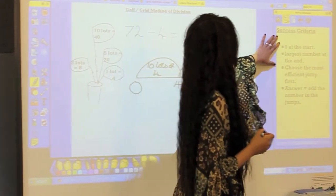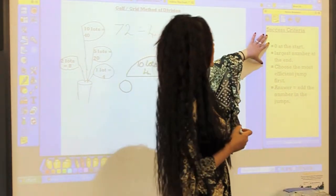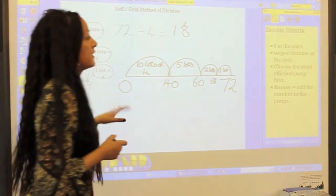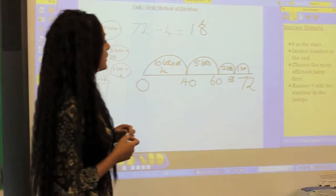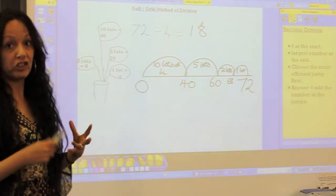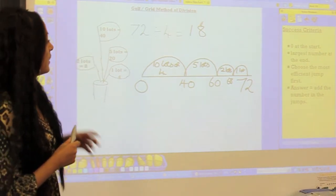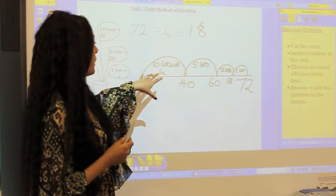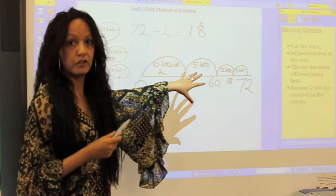So if you remember, the success criteria would be zero at the start of the number line, the largest number goes at the end, you choose the most efficient jump, then your answer is adding up the jumps that you've done.